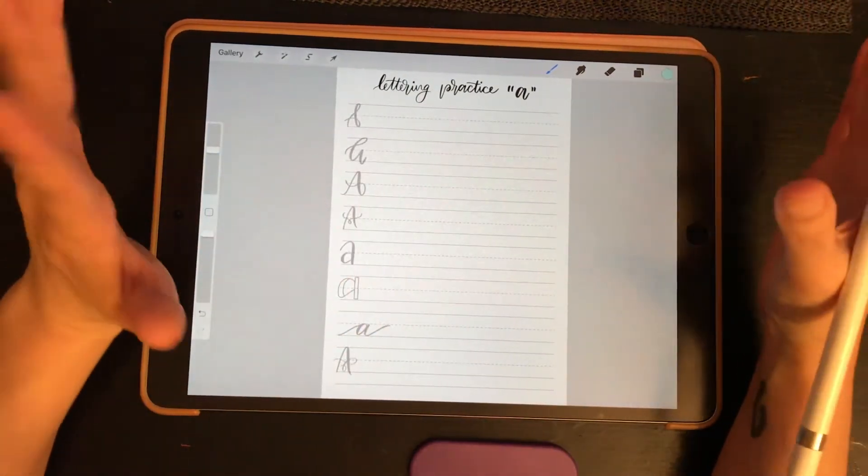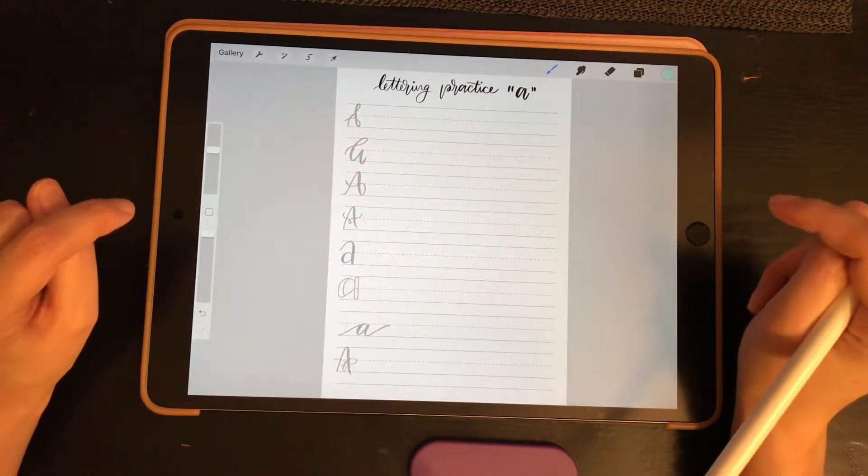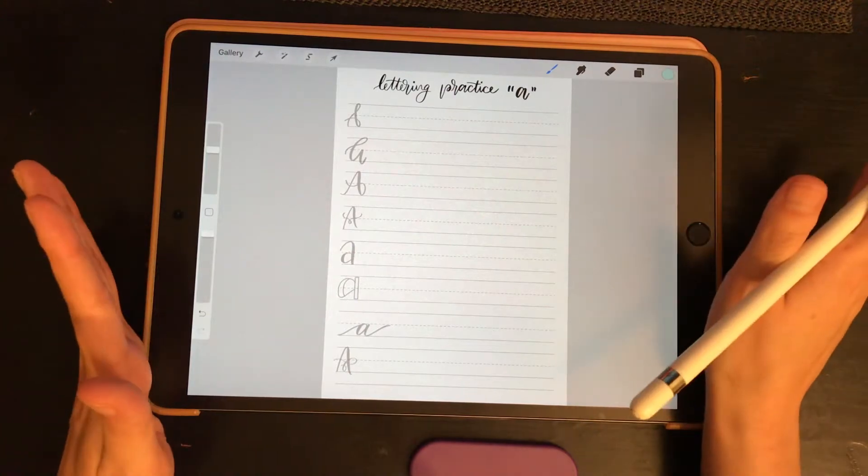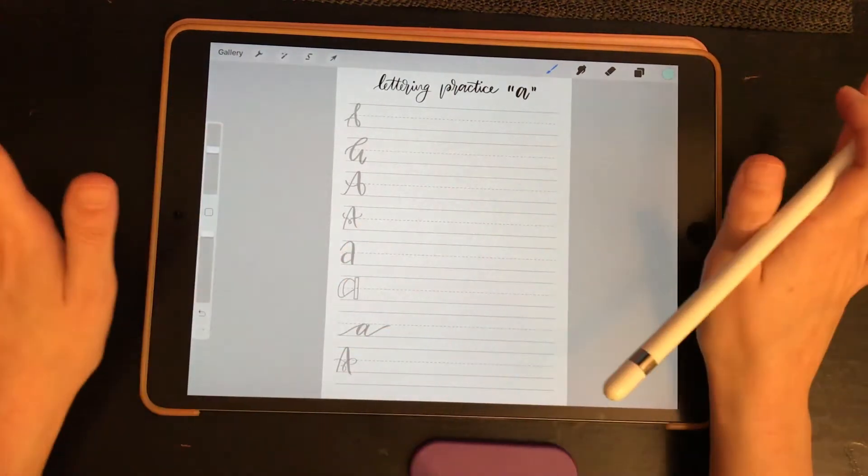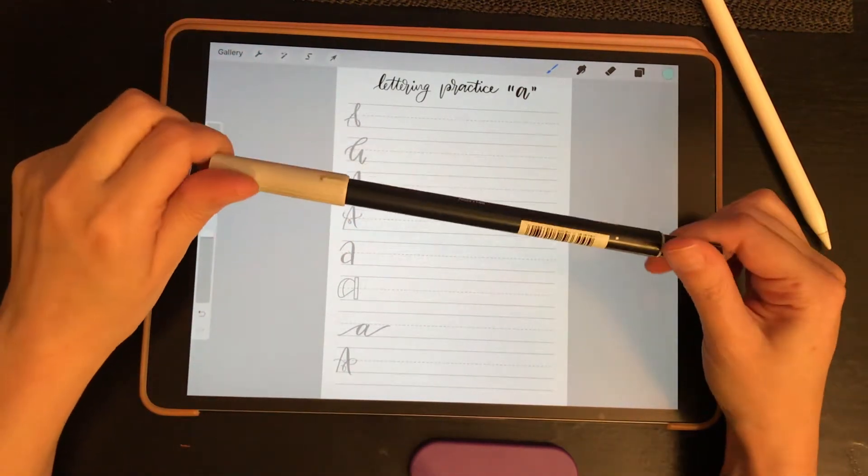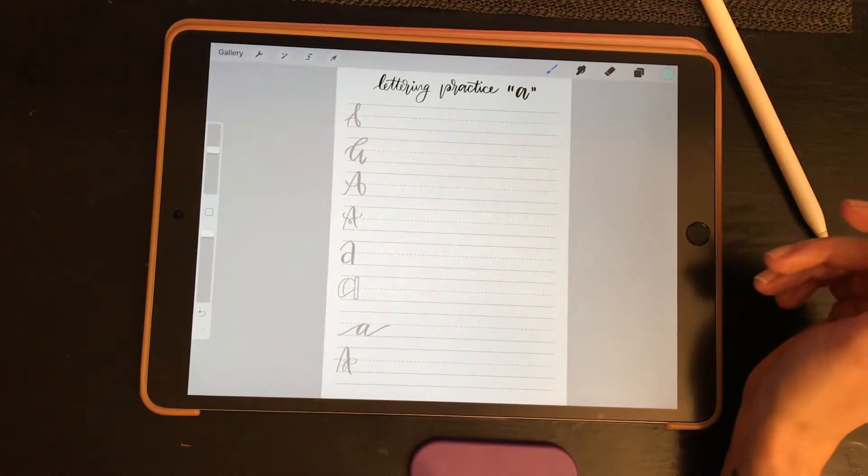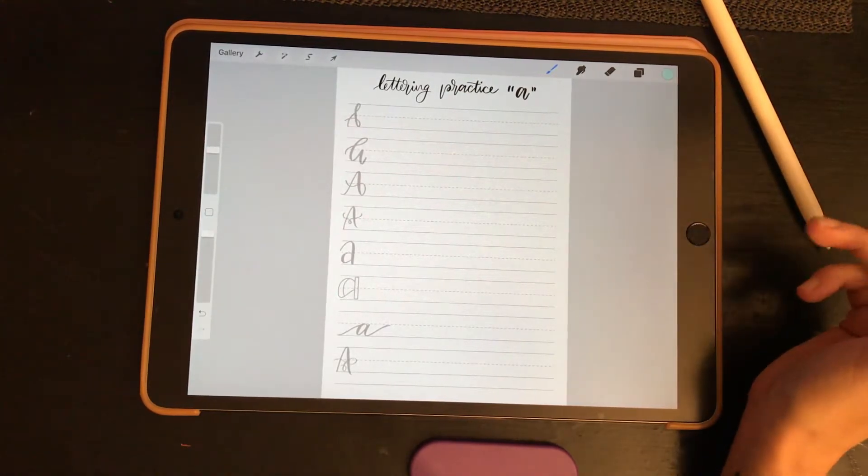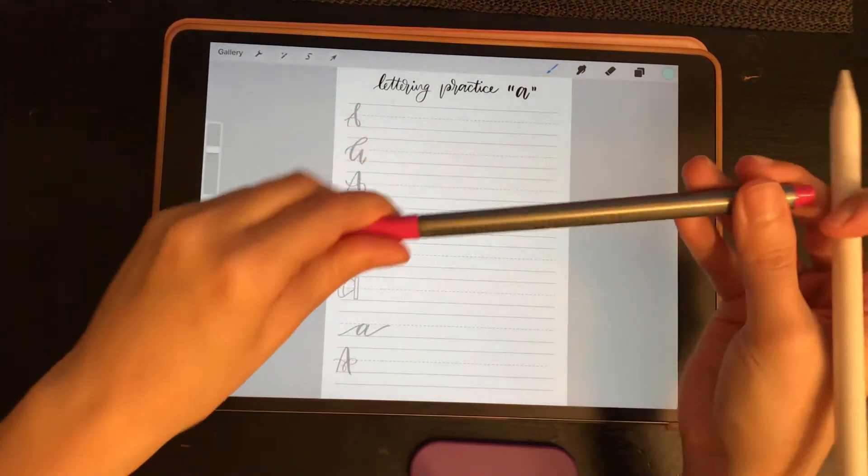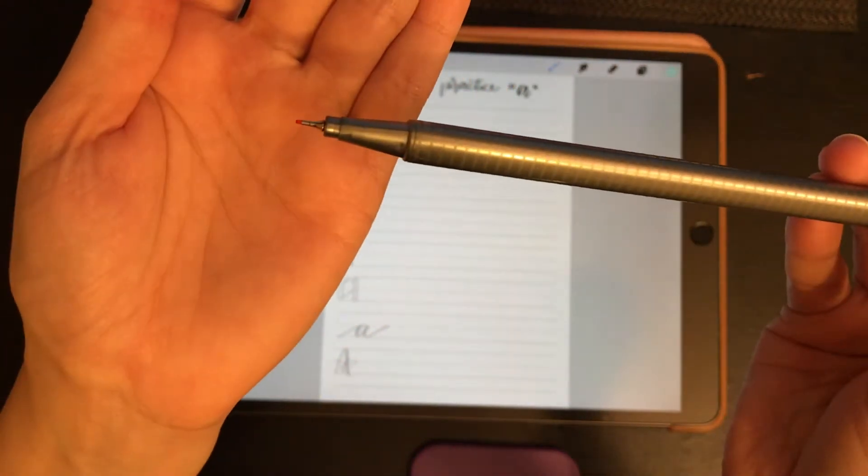So if you want this lettering practice sheet, just click the link below, it's my lettering group. I will probably be putting these out weekly for you. You can print them out if you don't have Procreate, that doesn't matter. They would work great for Tombow or all the other brush pens, any other brush pens you might have.